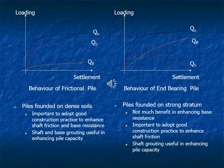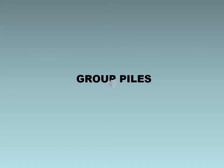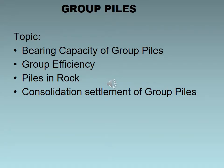Load versus settlement curves are shown for both frictional pile behaviour and end bearing pile behaviour — for piles founded on dense soil and piles founded on a strong stratum — both given for verification. After analysing a single pile, the group of piles comes into picture. Topics include: bearing capacity of a group of piles, group efficiency, piles on rock, and consolidation settlement of a group of piles.